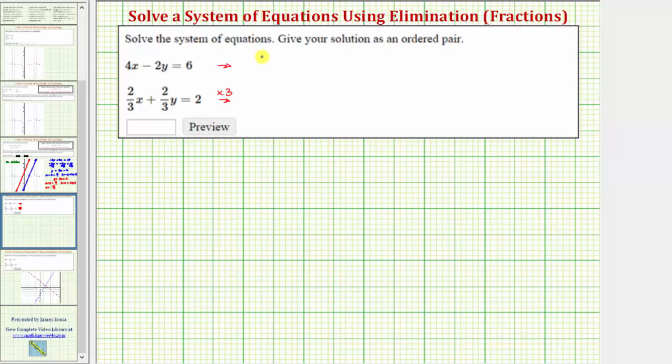The first equation will stay 4x - 2y = 6, and now multiplying the second equation by three, because two-thirds times three is two, on the left side we'd have 2x + 2y equals two times three is six. So let's go ahead and solve the system of equations in this form.